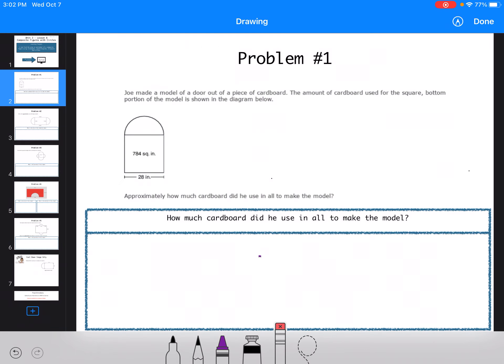So our first question says that Joe made a model of a door out of a piece of cardboard. The amount of cardboard used for this square bottom is in the model shown. How much cardboard did he use in all?